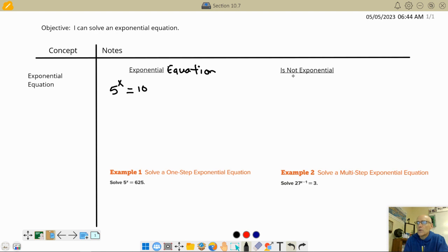Alright, now let's say you have something that's not exponential. That might look like this. 5x equals 10. So 5 times x equals 10 or 5 to the x power equals 10. This one's the exponential one. This one's called a linear function, or a linear equation.